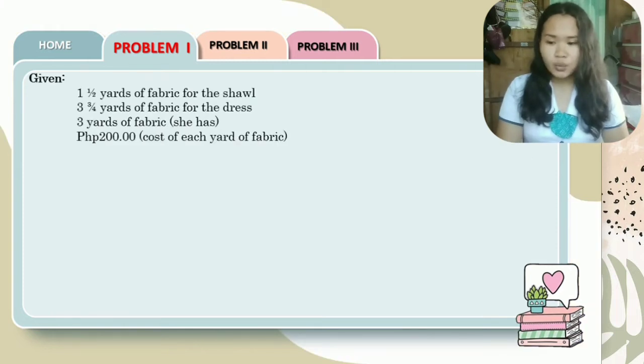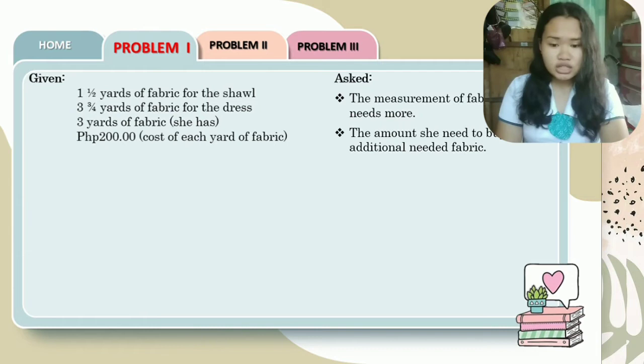We have here one and a half yards of fabric for the shawl, three and three-fourths yards of fabric for the dress, three yards of fabric which she has already, and 200 pesos cost of each yard of fabric. So, what is asked? The measurement of fabric she needs more, and the amount she needs to buy the additional needed fabric.